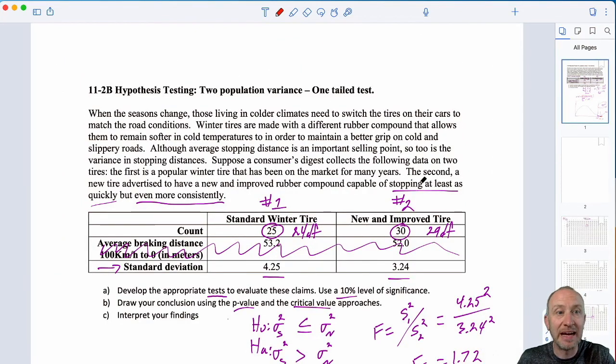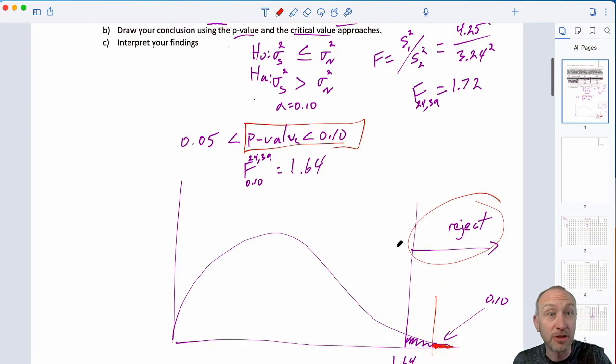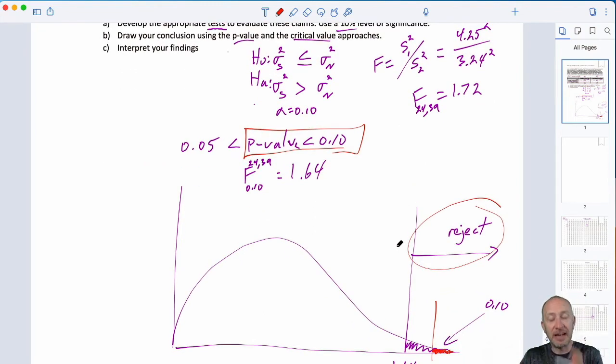So, using either approach certainly you must always get the same conclusion. Here, our level of significance was 0.1. Both of those approaches bring us to the conclusion to reject the null hypotheses.